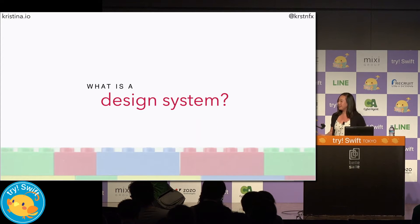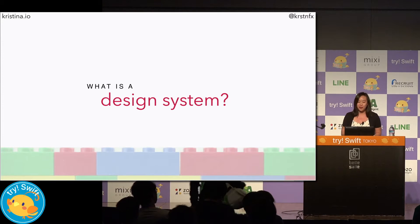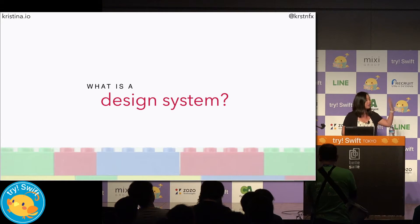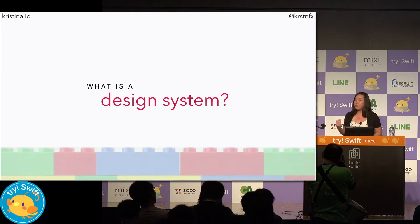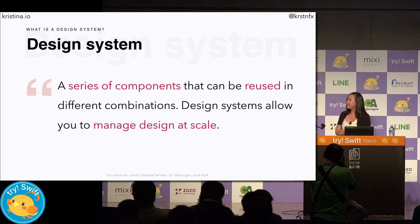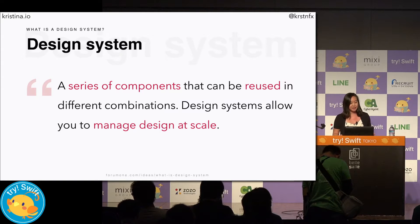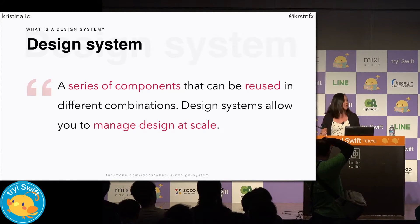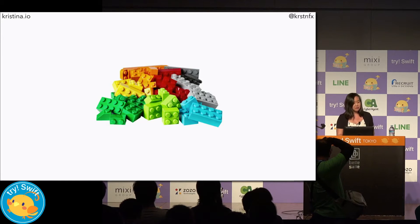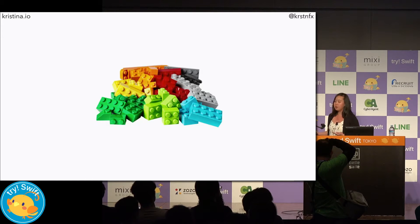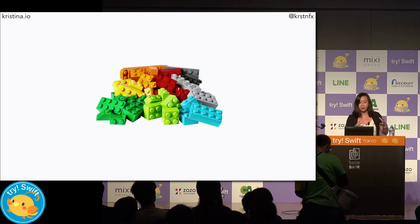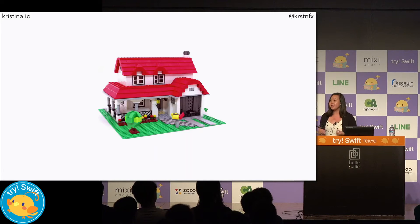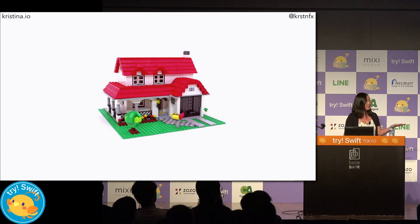First off, you may be asking: what is a design system? It's a relatively new concept in the mobile software industry and basically describes an alternative way of thinking about how we build our apps. It is a series of components that can be reused in different combinations. Design systems help you manage design at scale. So similar to how you can take individual Lego blocks, put them together in a particular way, and see these individual pieces in a whole different light — you can do the same for software.